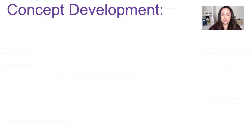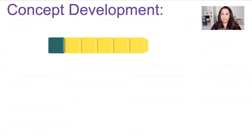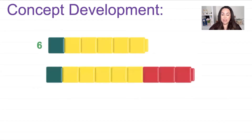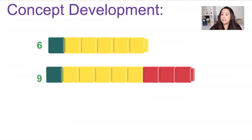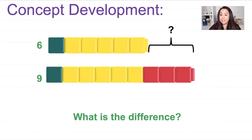Let's try another one. Now I have the same five yellow cubes but I'm adding one more, so I have six on top. On the bottom I have the same eight cubes — five yellow and three red — but I added one green, so now I have nine altogether. What is the difference? Looking at the difference, it's still the same: one, two, three red cubes. The number sentence is nine take away six is equal to three.